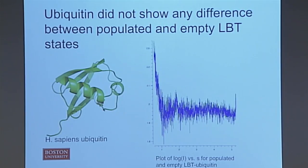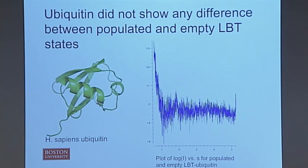In response to that, I worked with a simpler system — ubiquitin, which is not a membrane protein. I was able to produce much more featured data, but because of limitations of the instrument here at BU, I'm unable to tell the difference between lanthanide-populated and lanthanide-vacant forms of the protein.